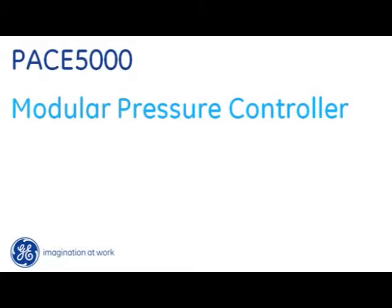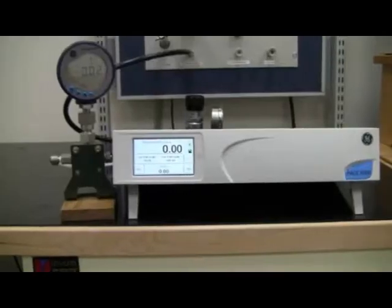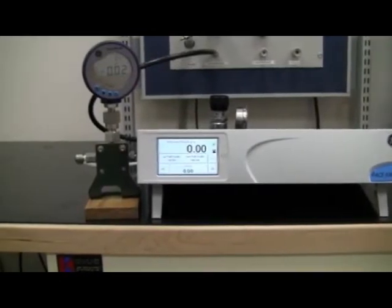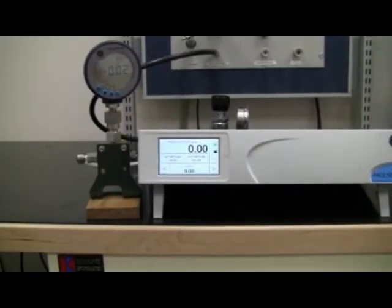PACE 5000 is the first of a new generation of pressure controllers and calibrators from GE Sensing that are based on a modular platform providing high-speed pressure control and an intuitive, easy-to-use touchscreen display. In this video demonstration we have a PACE 5000 with a full-scale pressure range of 145 psi or 10 bar.